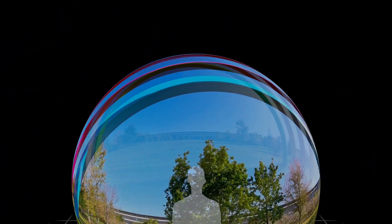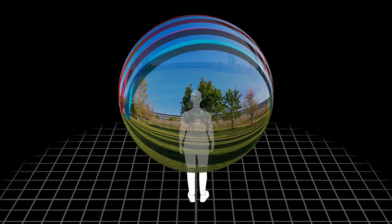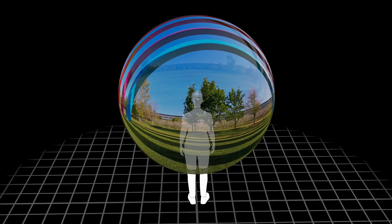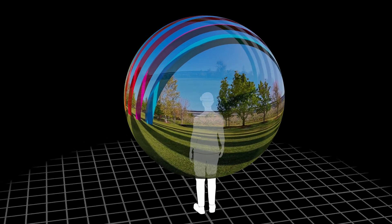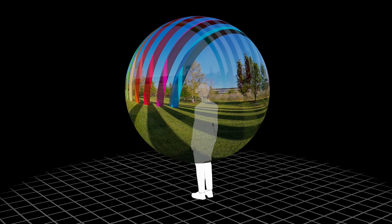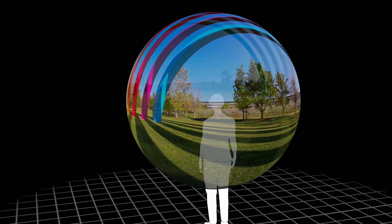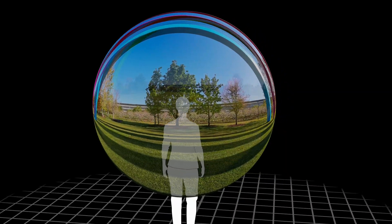To achieve this, the 360 video is wrapped onto a sphere completely surrounding the viewer, centred on their eyes and filling their field of view whichever way they look.